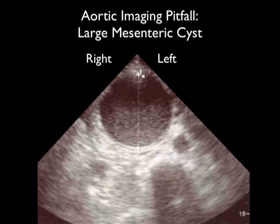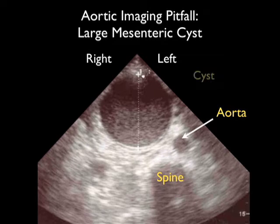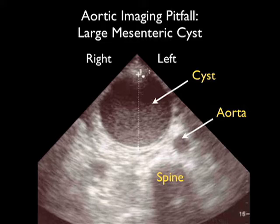This ultrasound image shows another interesting pitfall. At first glance we see a very large dark structure towards the top of the picture that could be mistaken as a very large abdominal aortic aneurysm, but close attention to the location of the spine posteriorly will help. Notice the bone table of the spine, and just anterior to the spine we can actually see the aorta. This very large structure is actually a very large mesenteric cyst, and it failed to have pulsations with color power Doppler.